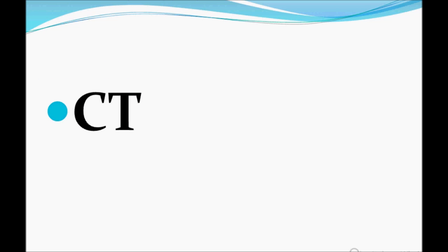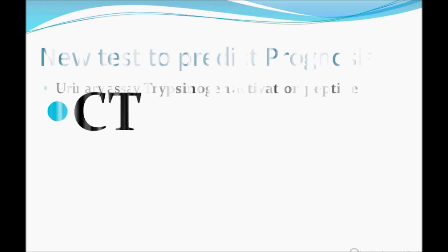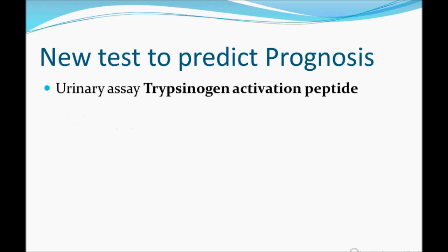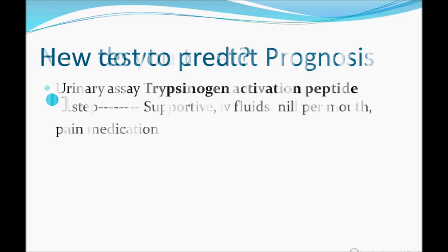There is also a new test to predict prognosis: the urinary assay of trypsinogen activation peptide. Just remember it — no need for more detail beyond that.